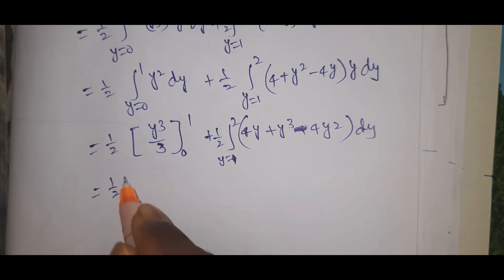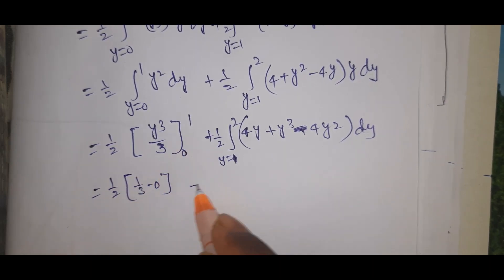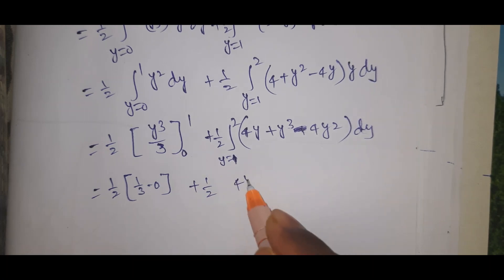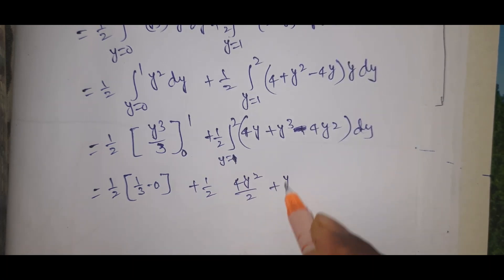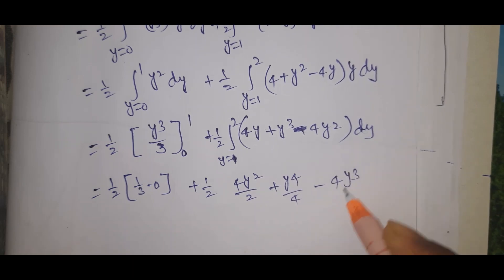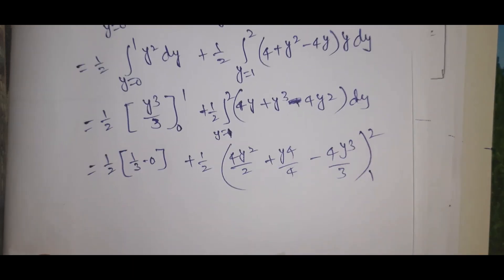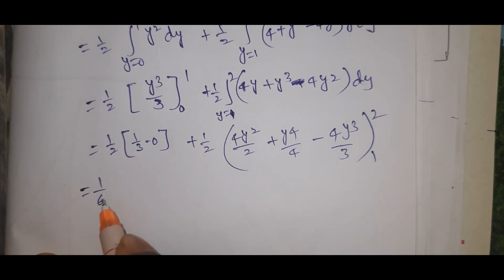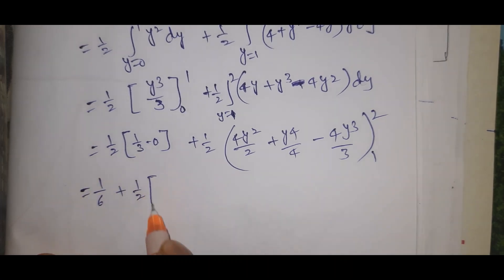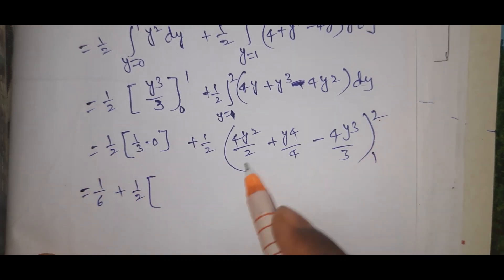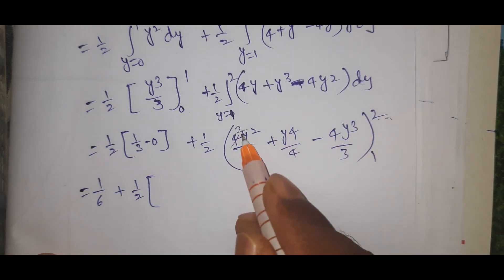Evaluating: (1/2)·[y³/3] from 0 to 1 gives 1/6. For the second integral: (1/2)·[4y²/2 + y⁴/4 − 4y³/3] evaluated from 1 to 2.